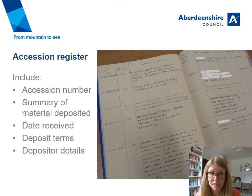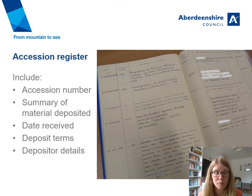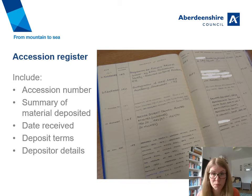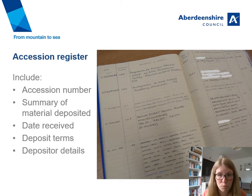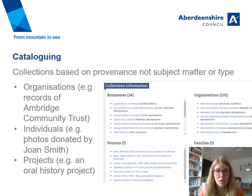The sort of things you'd want to include are an accession number, given sequentially as each new accession arrives, which you can use to label the material until you've had time to catalogue it, a summary of what's in each accession so you don't get confused between them, the date it was received, the deposit terms, and contact details for the depositor. You might also want to do a more formal agreement with whoever's deposited material with you to confirm the terms of deposit.